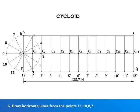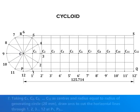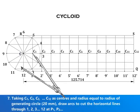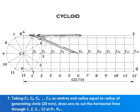Draw horizontal lines from the points 11, 10, 8, 7. With C1, C2, C3, etc. as centers and radius equal to the radius of the generating circle,